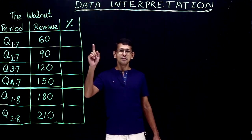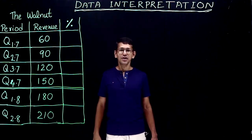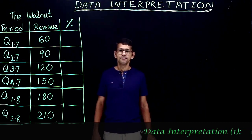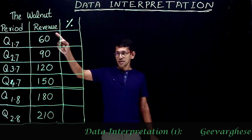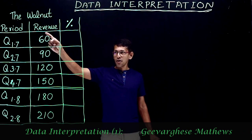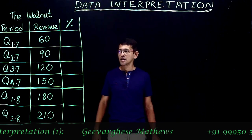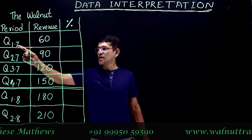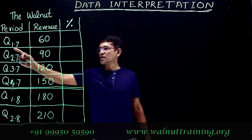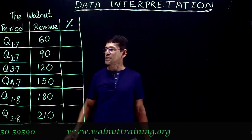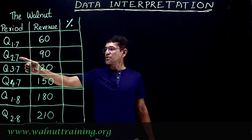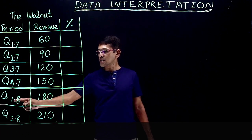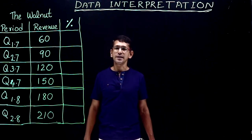This is one of the major areas in every competitive exam. I'll take a simple example right here. This is the revenue of the organization called 'The Wallet.' This period is mentioned as Q1 2017, that is quarter one in the year 2017. This is quarter two 2017, quarter three, quarter four. Now this is quarter one 2018 and quarter two 2018.